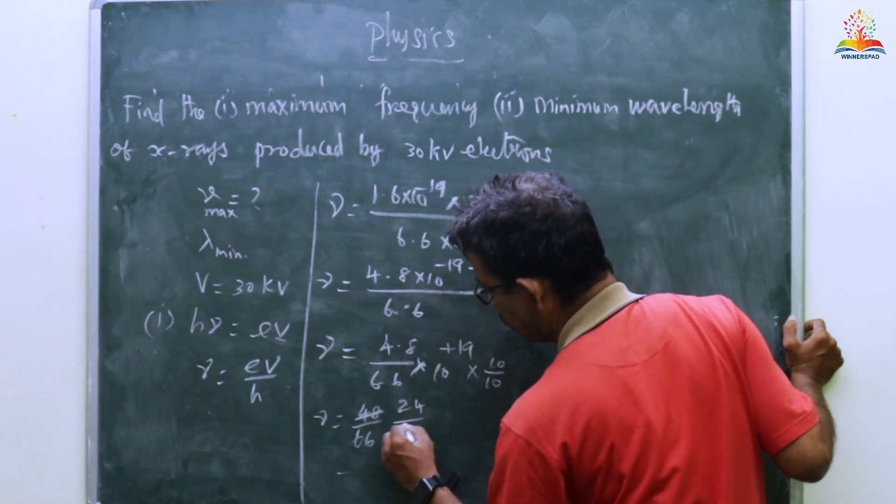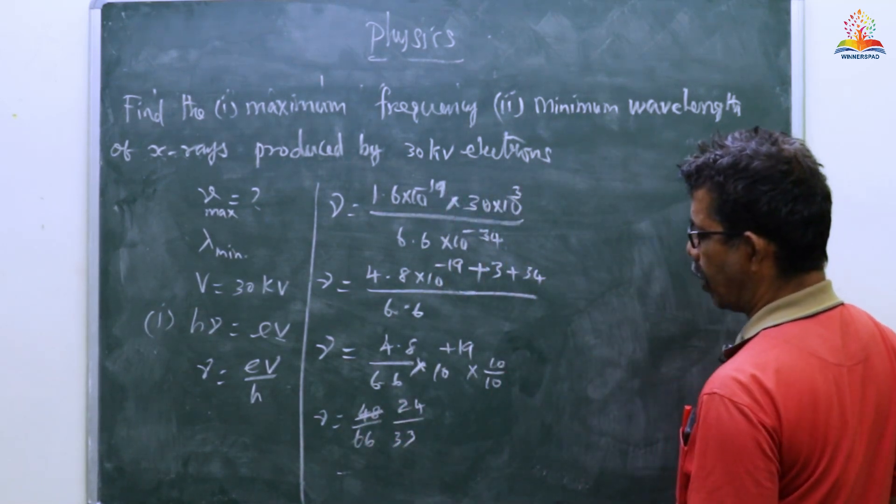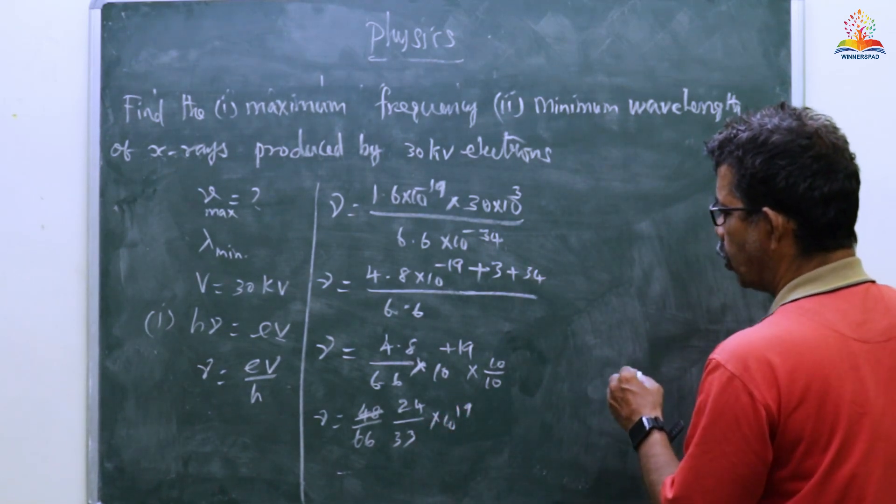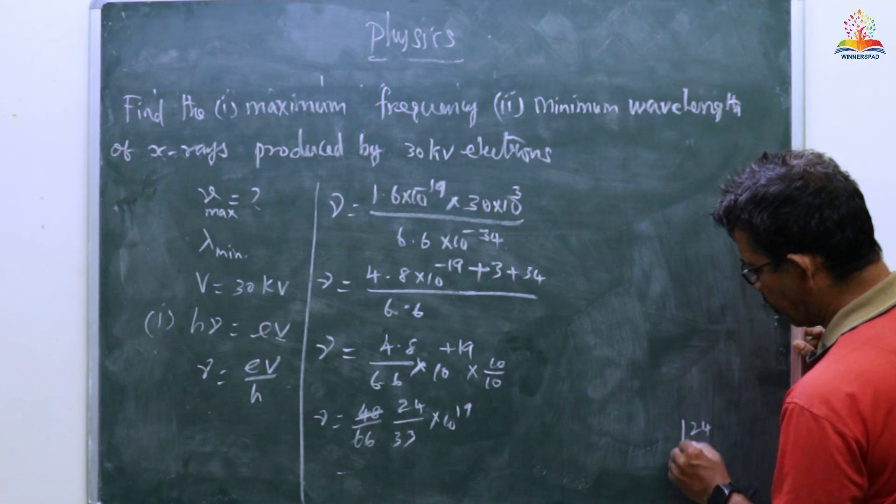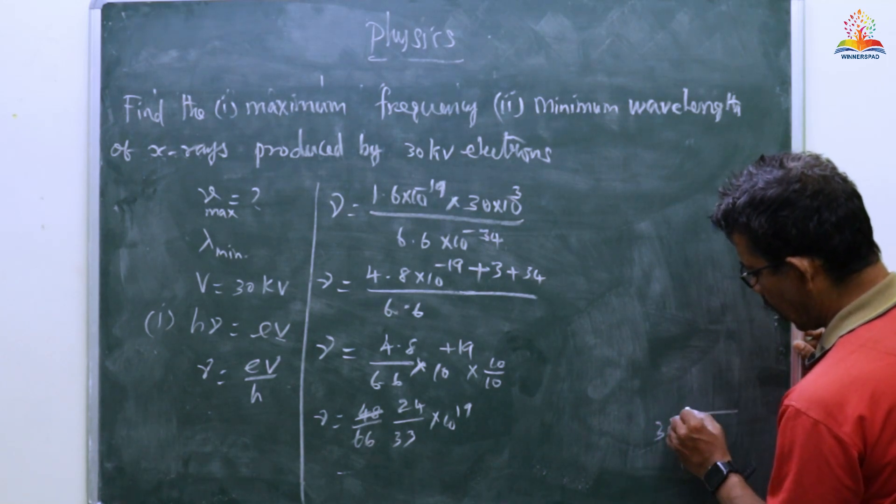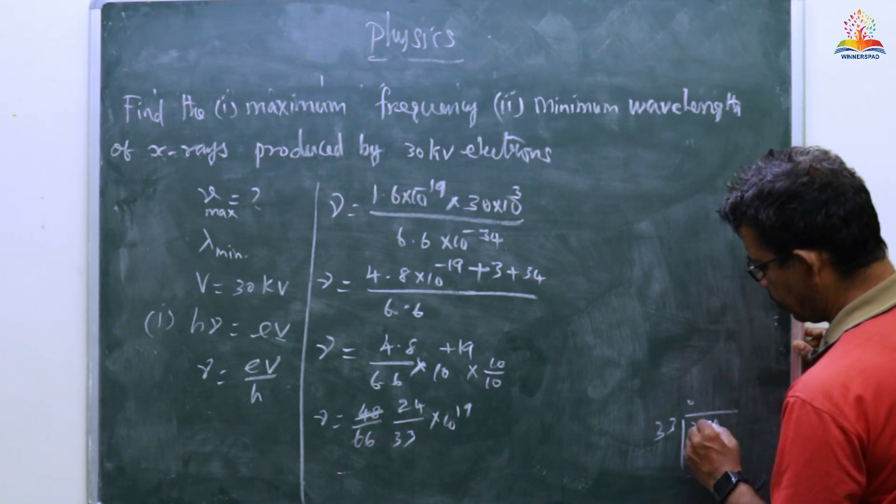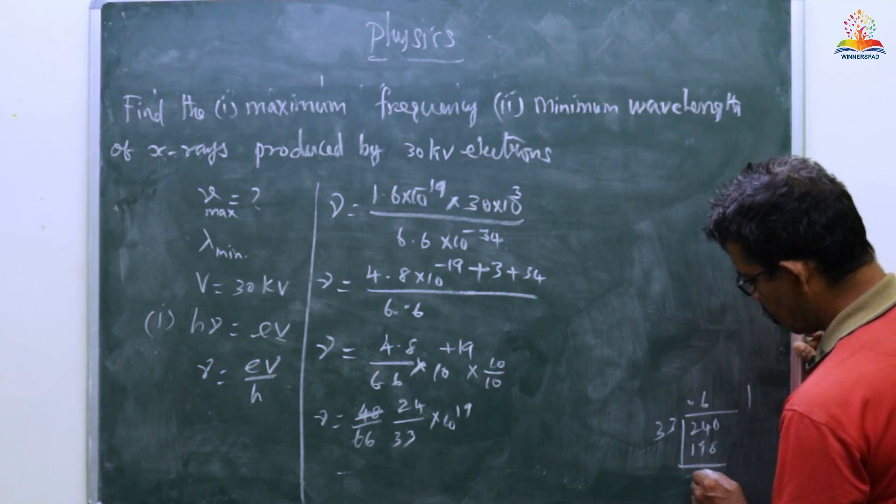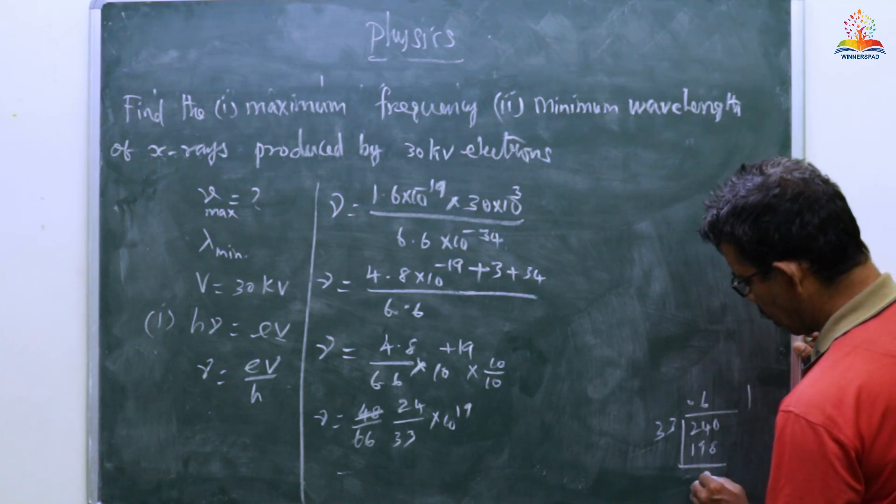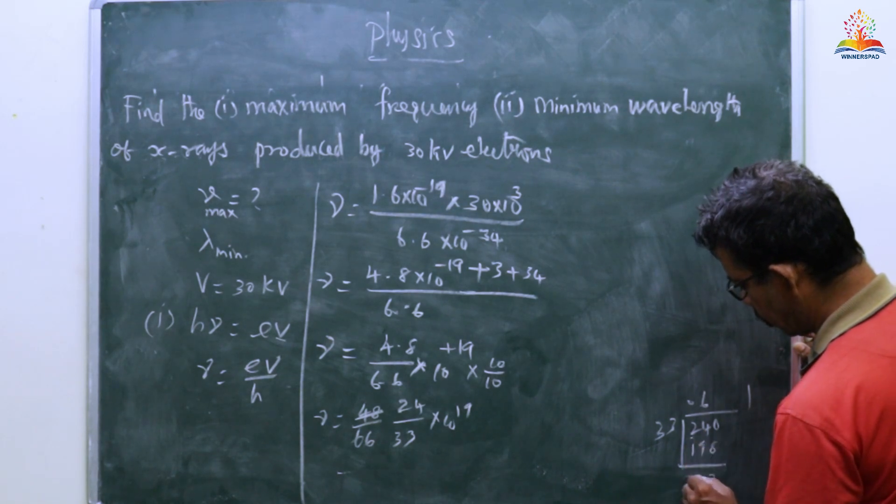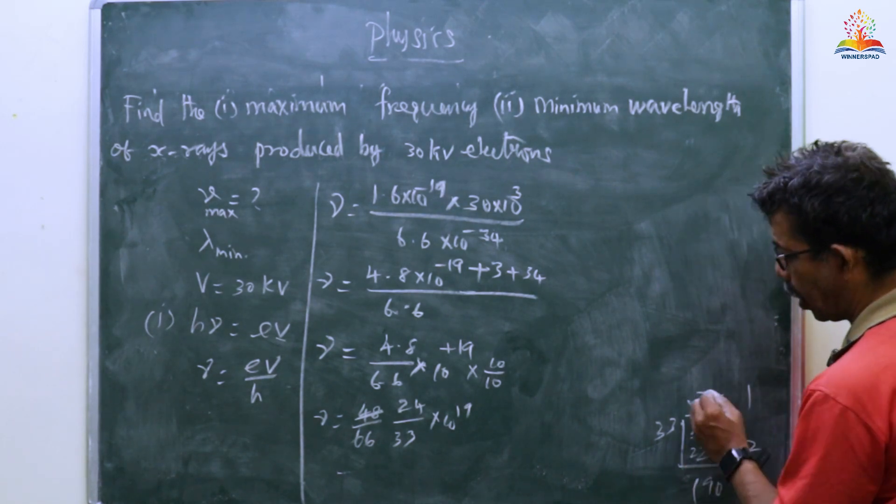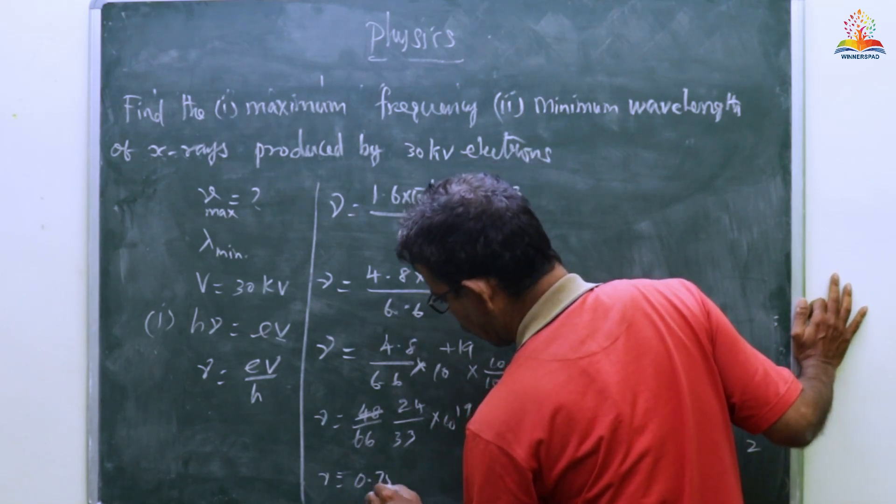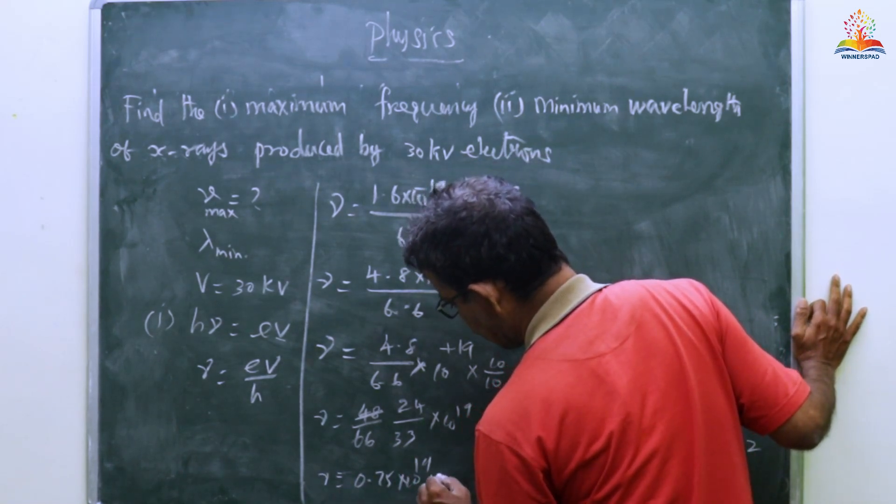Then number 2, 4, 3, 3, times 10 to the power of 19. Then 24, 33 I'll divide. Then point 240, then 6, 0, 10, 8, 1, 2, 3, 3, 4, 4, 5. Then ν equals 0.75 times 10 to the power of 19 hertz.